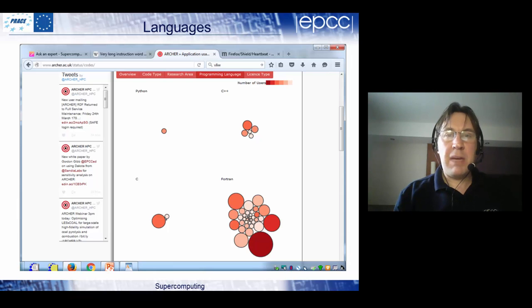Now this picture is somewhat misleading in that this is the programming languages used by the most popular packages that are run. And in fact, although the most popular packages that are run are written in Fortran, that doesn't mean that people are developing in Fortran. At least it doesn't mean that Archer users are developing in Fortran. A lot of these packages are centrally maintained by collaborations, and they happen to be written in Fortran, and they're very widely used.